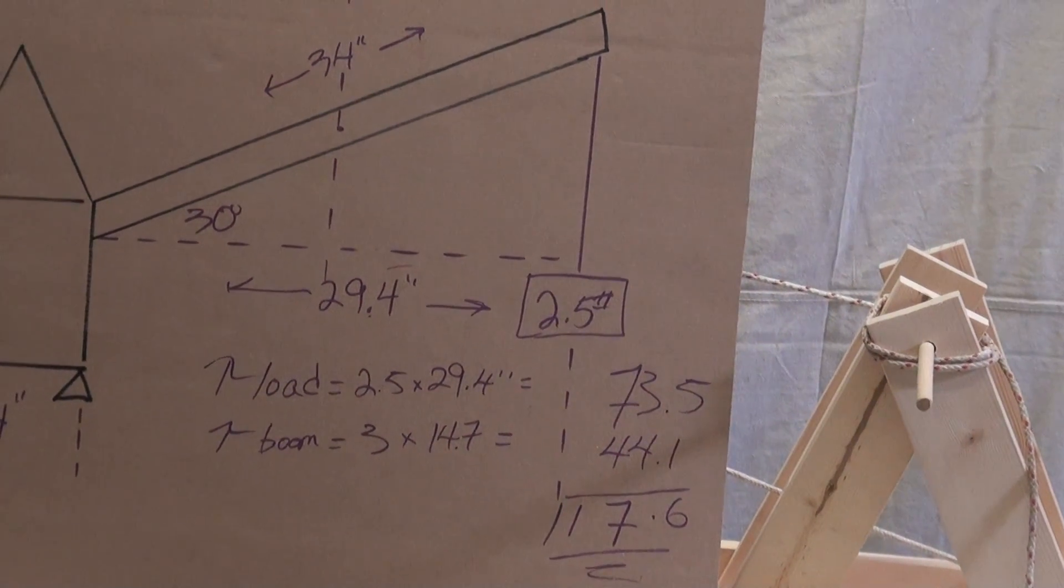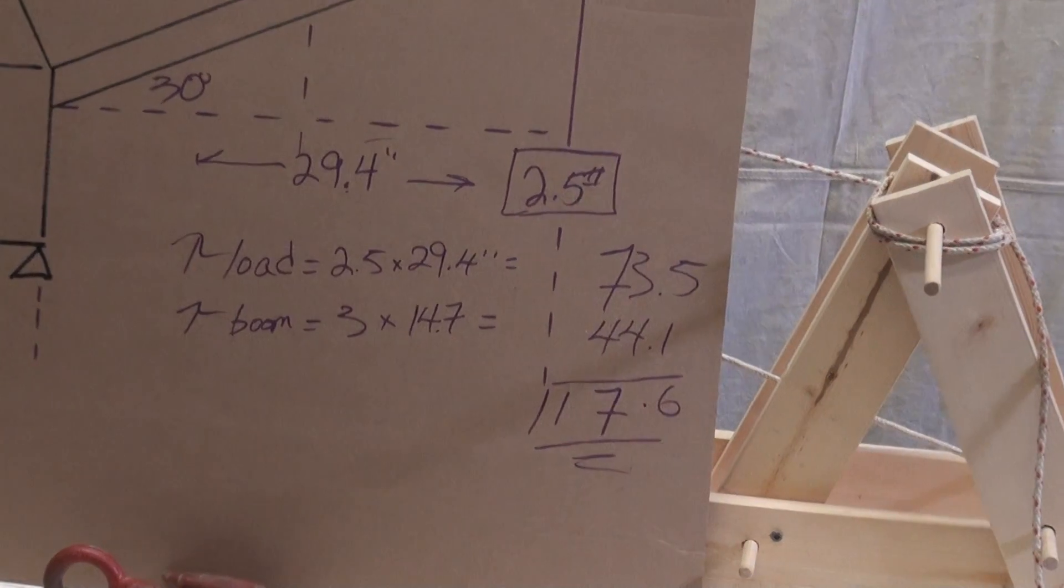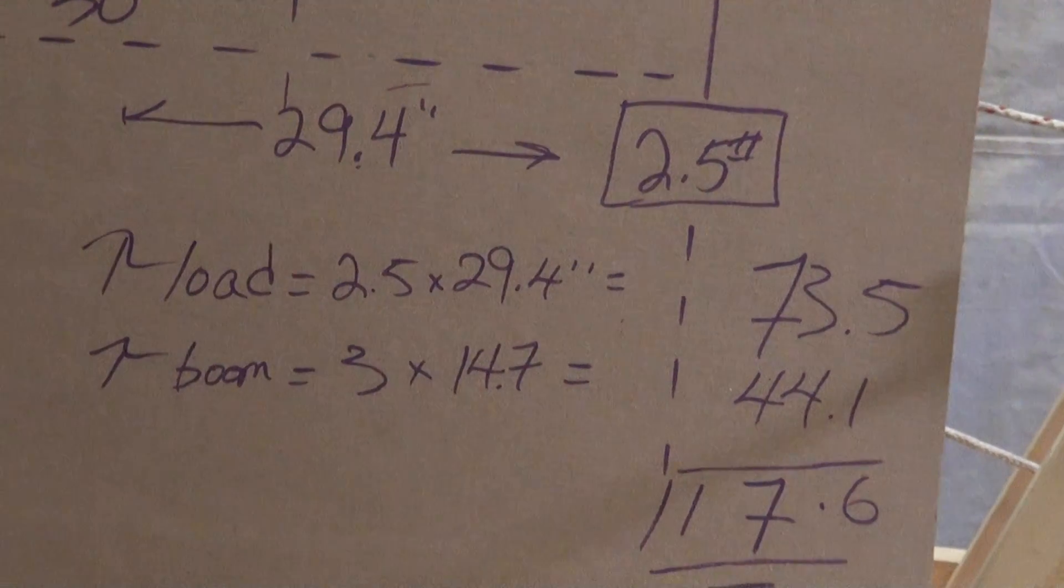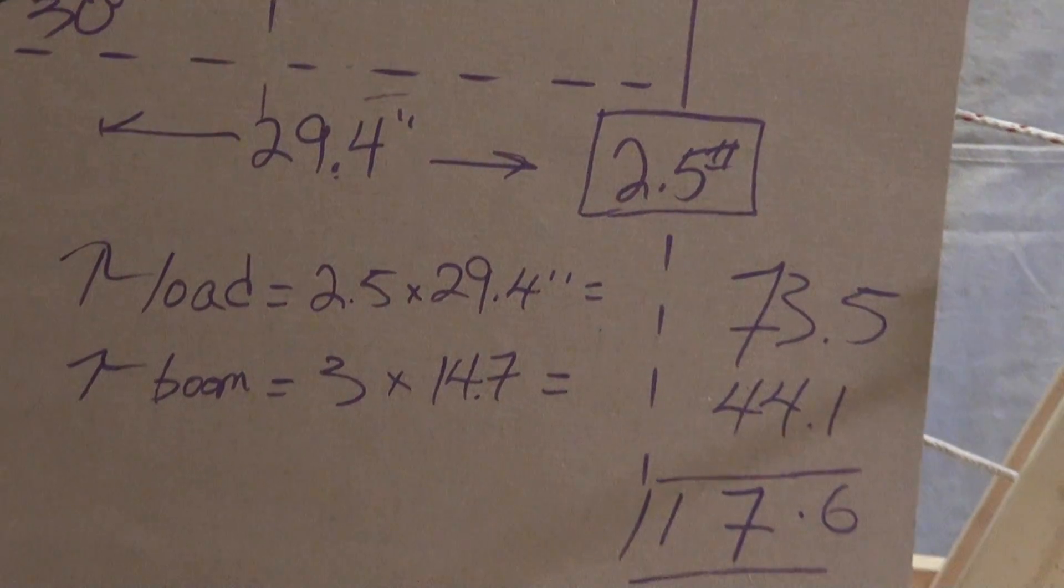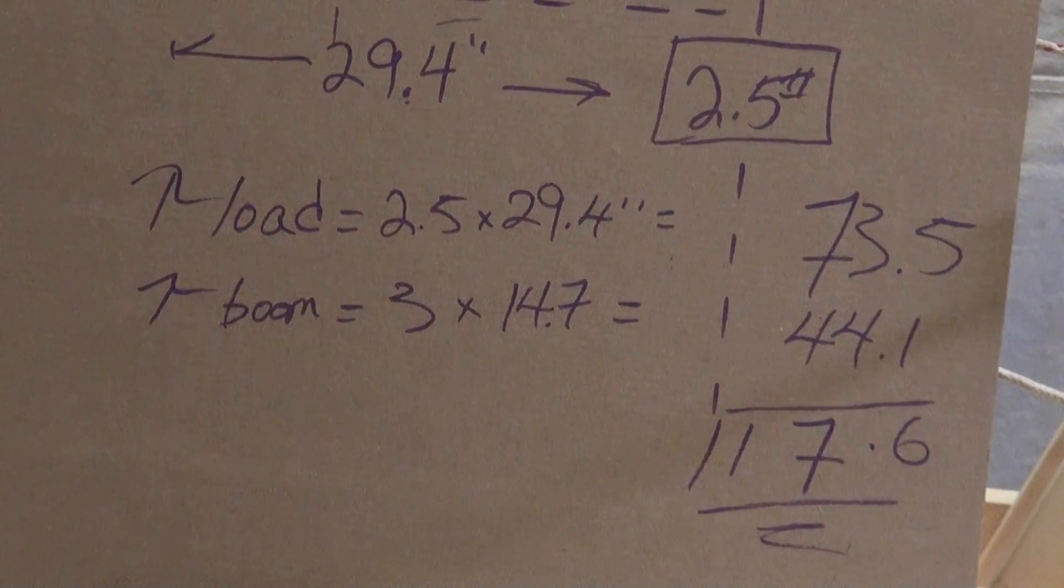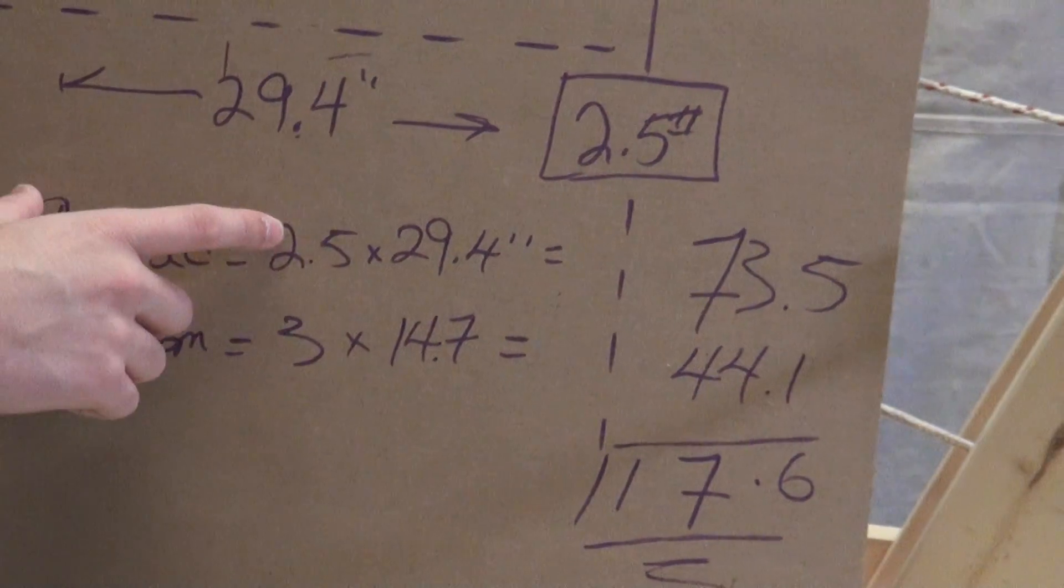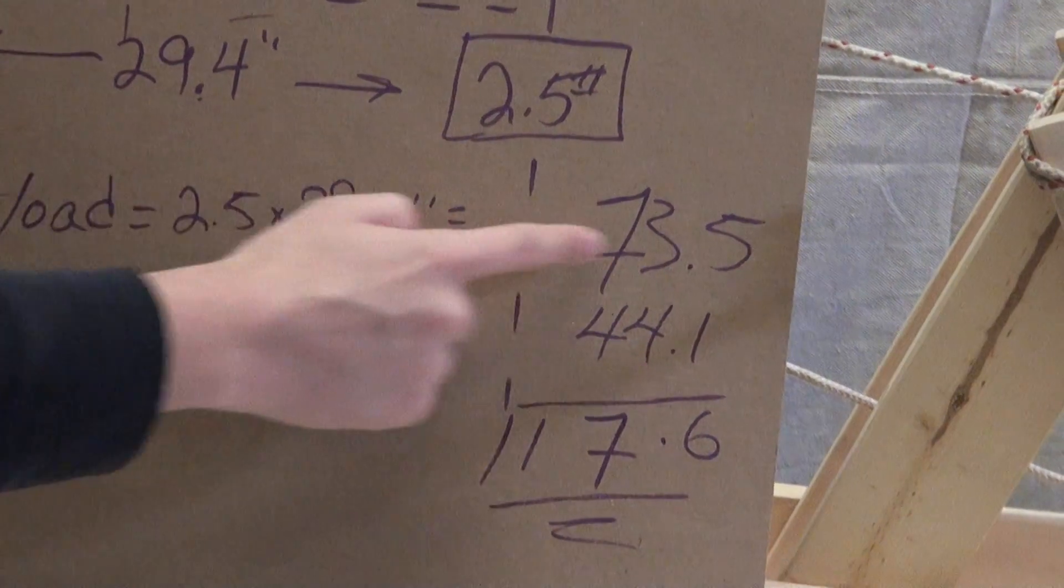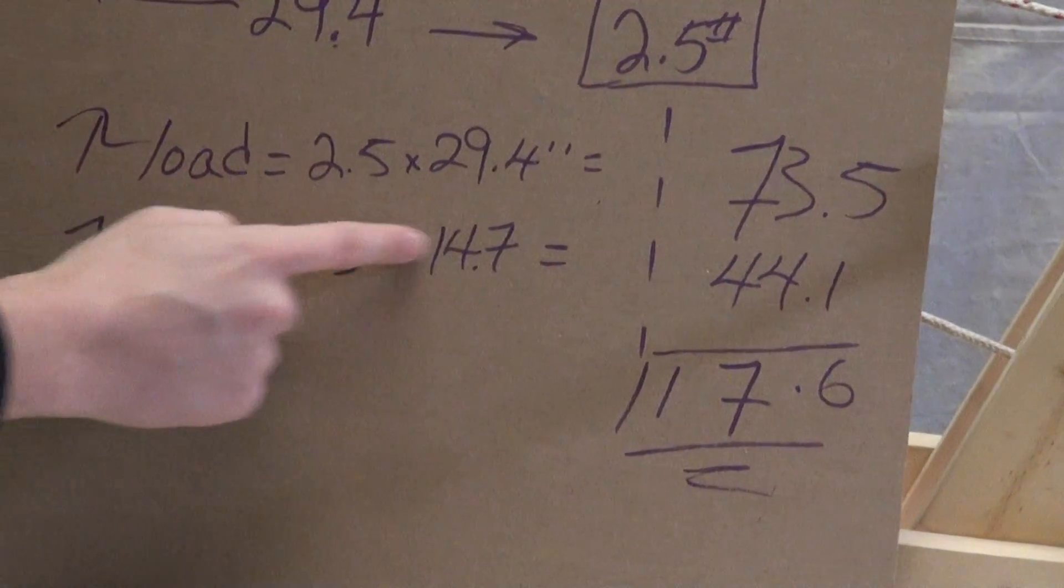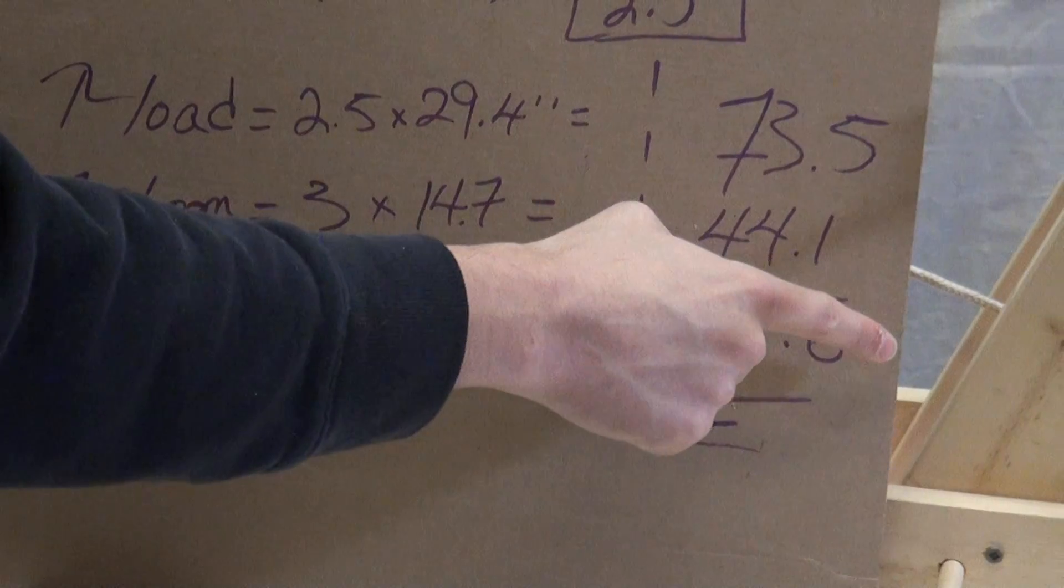The torque for the load, it's the same 2.5 pounds, but the distance is 29.4 inches. And the boom is also further away, 14.7 inches. So by multiplying these out, we get the torque for the load is 73.5 inch pounds of torque. The torque for the boom is 44.1 inch pounds of torque.